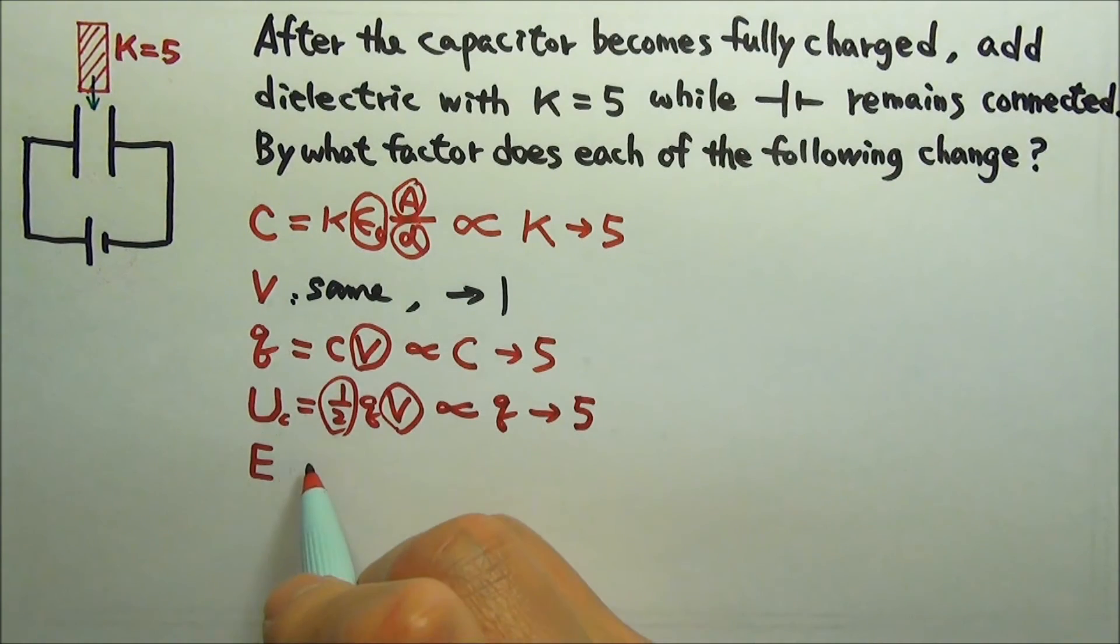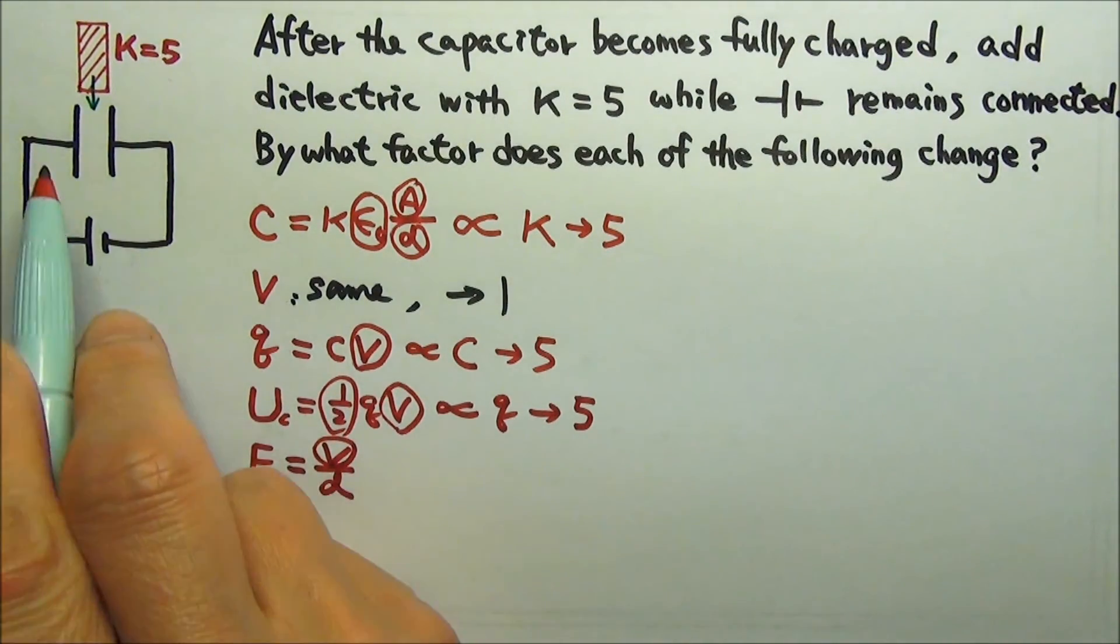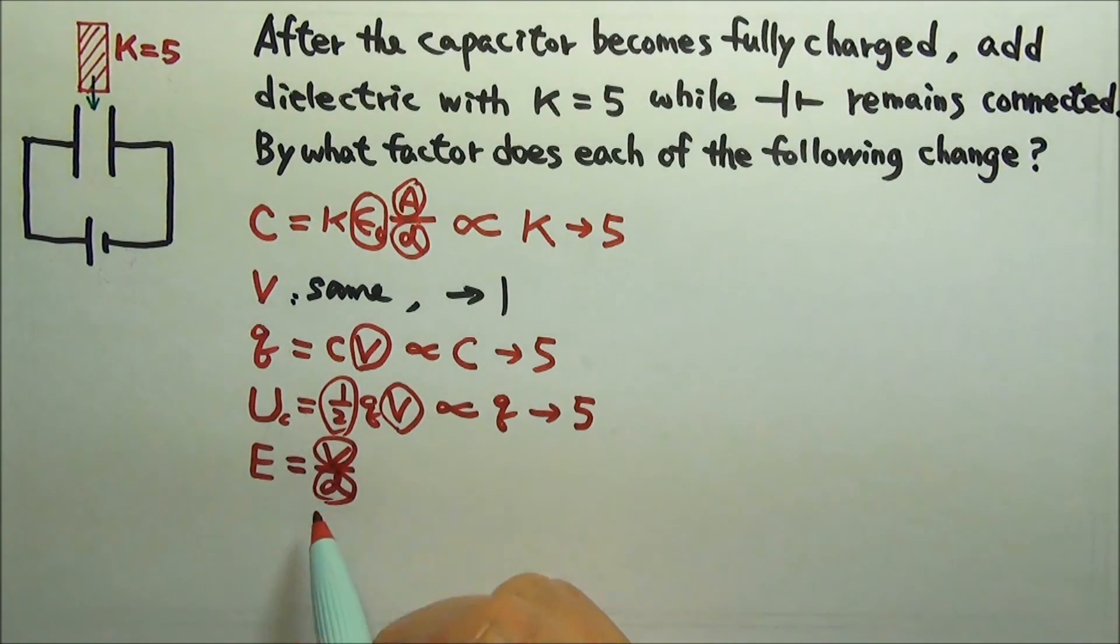V equals ED, so E equals V over D. The voltage stays the same, and the plate separation does not change. So the electric field changes by a factor of 1.